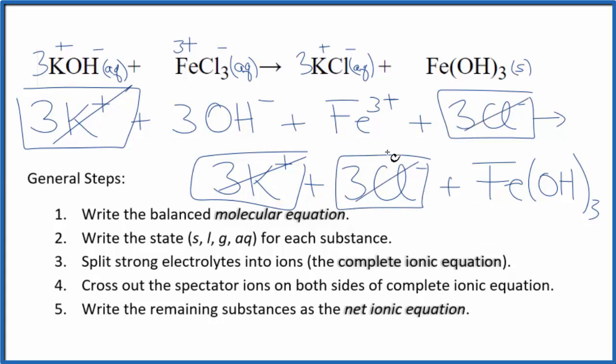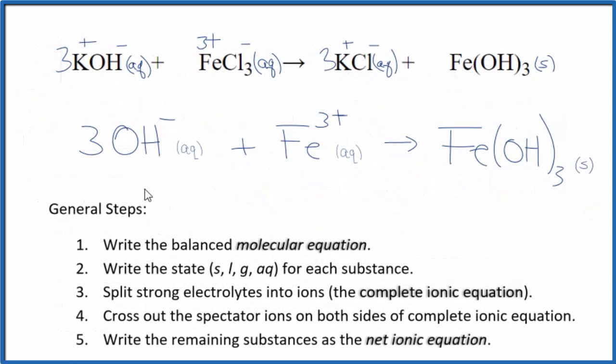So this is the net ionic equation for KOH plus FeCl3. Let me clean this up. I'll write the states. We'll have our net ionic equation. So this is the balanced net ionic equation for potassium hydroxide plus iron three chloride.